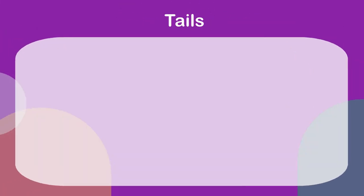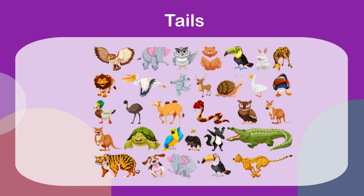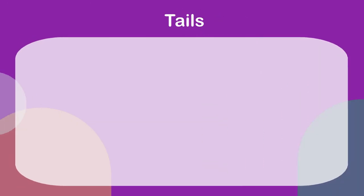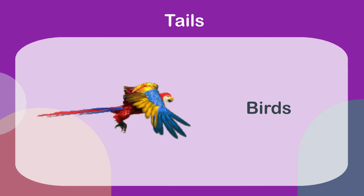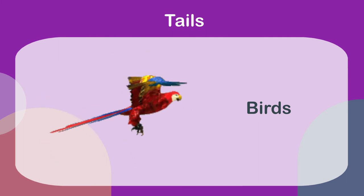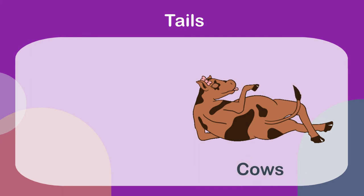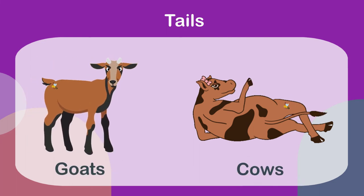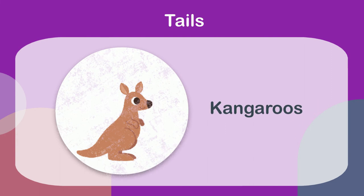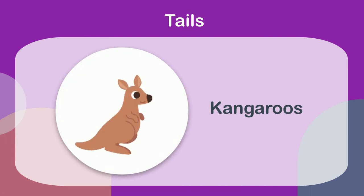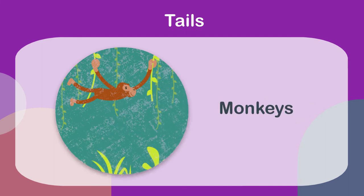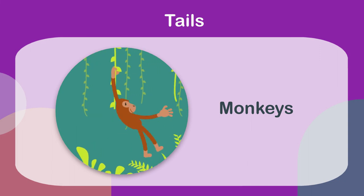Tails: a large number of animals have tails. Some animals like birds have feathery tails which help them keep balance while flying. Some animals like cows and goats use their tails to brush away flies and other insects from their body. Some animals like kangaroos use their tail to keep balance while moving. Some animals like monkeys have very long tails which help them climb trees.